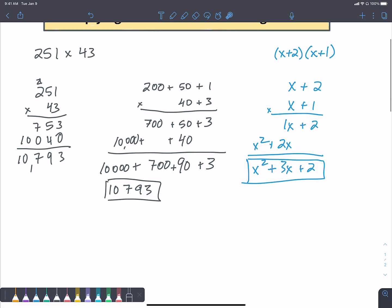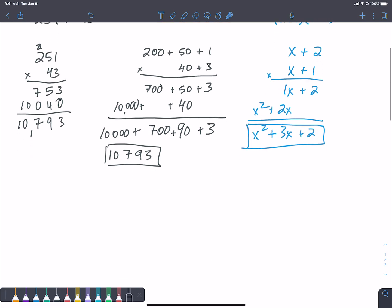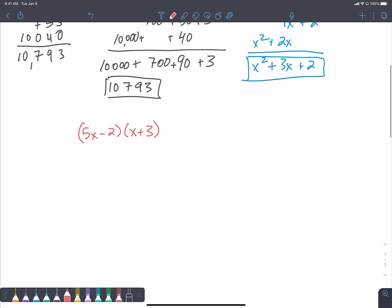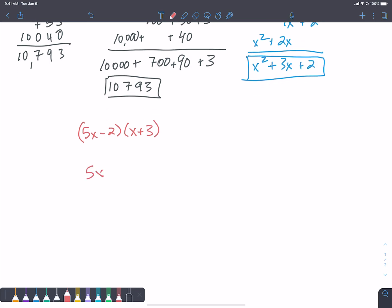Again, it doesn't have to be just positive values. We could come up with something with negative values as well. We could use something like 5x minus 2 and x plus 3. I'm still going to stack them up the same way. Let's do 5x minus 2 on the top, x plus 3 on the bottom. And I'm going to multiply these two things together.